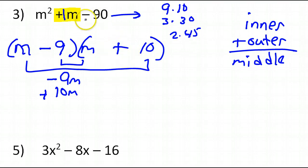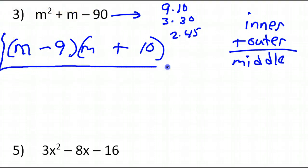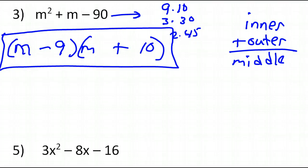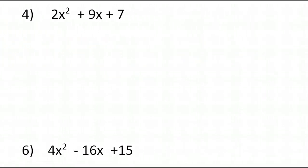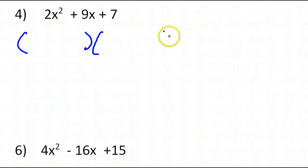Is it time for the more challenging problems? Let's take a look at number 4 — finally, a little bit of a challenge. First we look: is there a common factor? No. So we go ahead to the binomial times the binomial. We have to be a little more careful now that we have a leading coefficient that is not 1. 2x squared can only factor as 2x and x. 7 is a prime number, so 7 can only factor as 1 times 7.